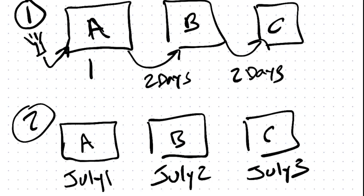Let's map this out. On July 1 they get access to Module A, July 2 access to Module B, July 3 access to Module C. We need to set up a separate membership level for each module, then move members from one membership level to the next as we want to give them access. So go back to setup and create more membership levels — that's how you drip courses on specific dates.